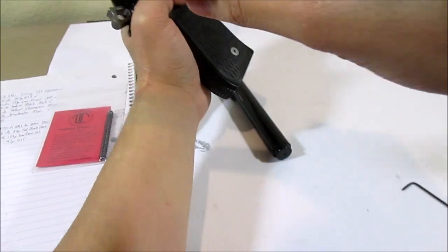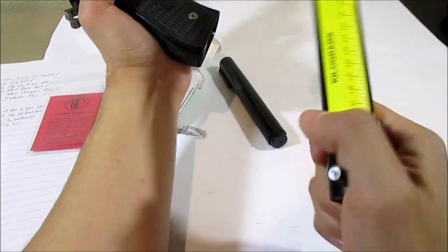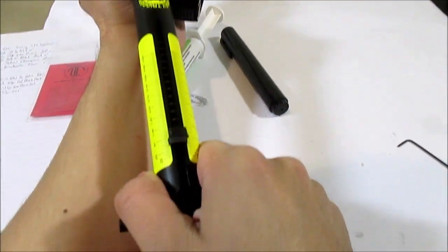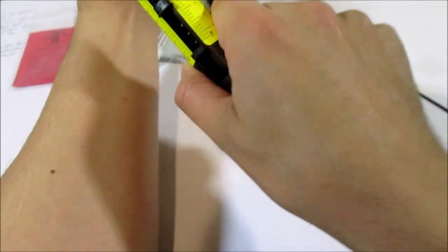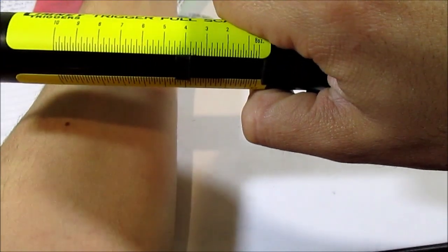Three pounds eight ounces. Three pounds 12 ounces, so the single action pull is about the same.